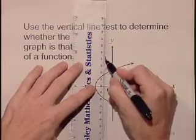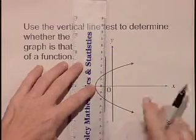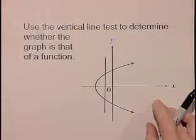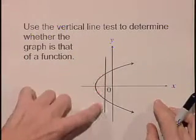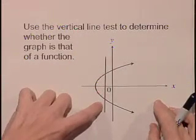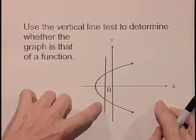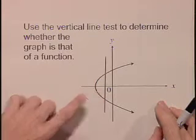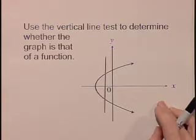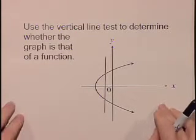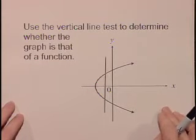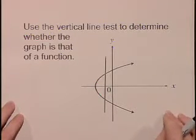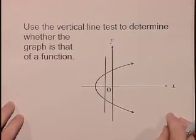And if we do that to this graph, notice it touches in multiple places — in this case twice. So this is not a function according to our vertical line test.